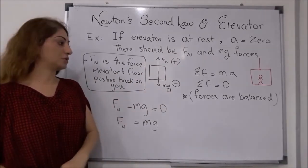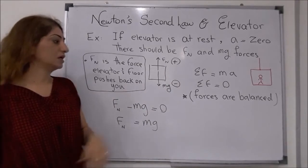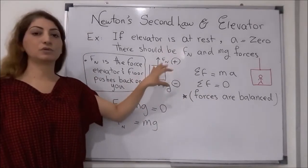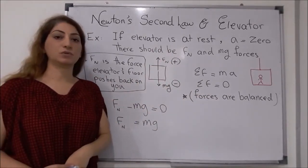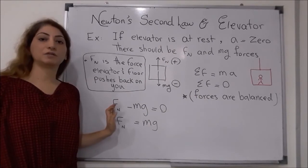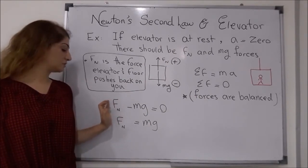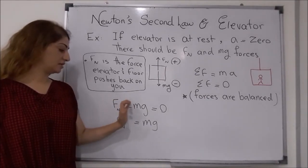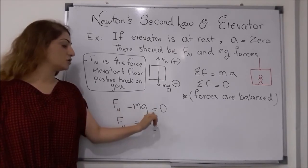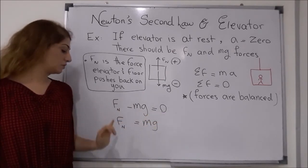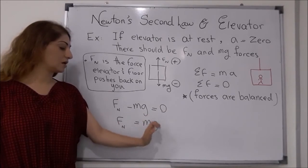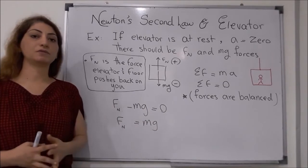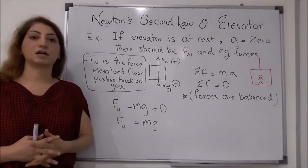There is a normal force which is upward, and the same size as the downward force which is m times g, or the weight of the object, which is negative. The forces are balanced, so the sum of the forces should be zero. Normal force, which is positive, plus the weight of the object in the negative direction, should equal zero. So the normal force equals m times g. Now I will write some examples to understand the concept better.